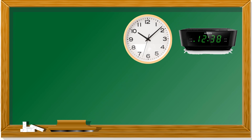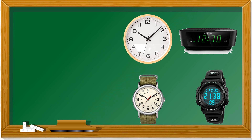Let's take a look at these. What are these? These are clocks. I'm sure you have a clock at home. And these are watches — one watch, two watches. Clocks and watches tell us time. There are two different types of clocks and watches. This one is analog, meaning they have the minute hand, the second hand, and also the hour hand. These are digital.